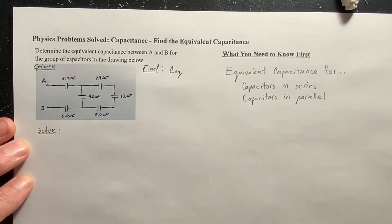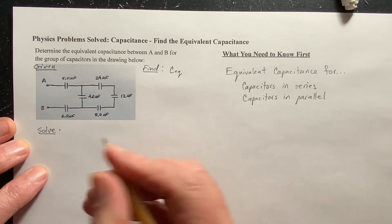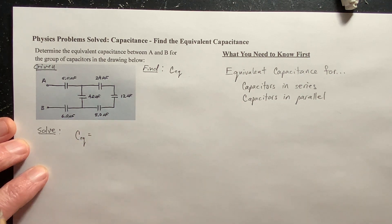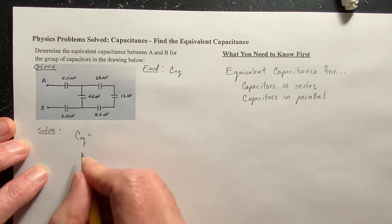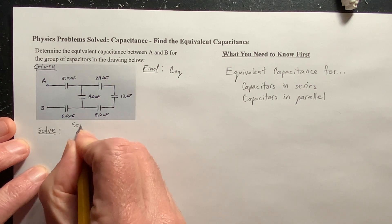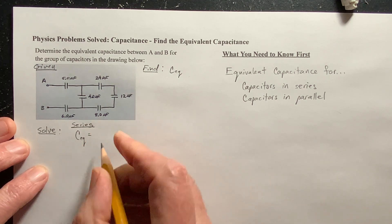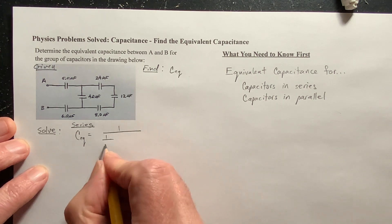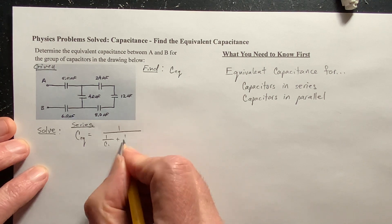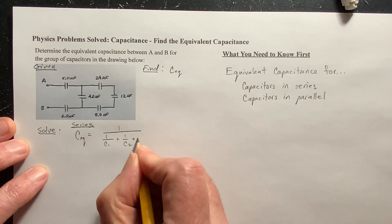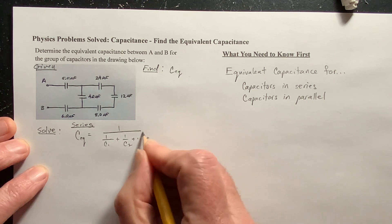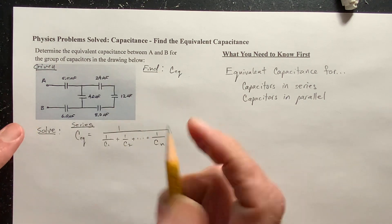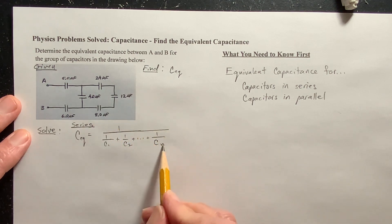Now, what is the equation for capacitors in series? Well, it's kind of a weird one. The equivalent capacitance for capacitors that are in series is, and I like to write it like this, 1 over 1 over C1, plus 1 over C2, plus dot, dot, dot, however many you have, C to the n. You might have n number. In this case, it's 1, 2, 3. So, n is 3. So, we're going to have three capacitors.